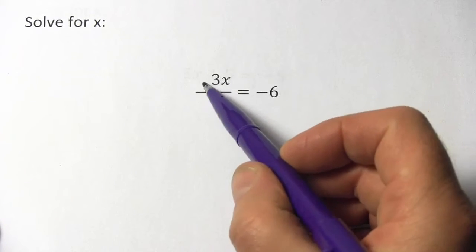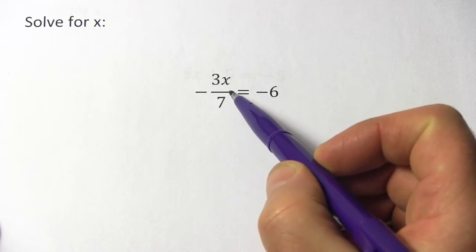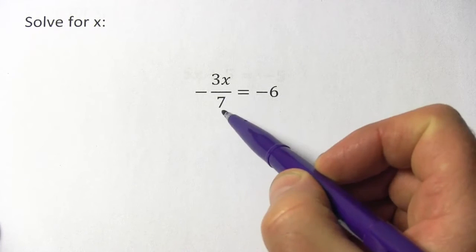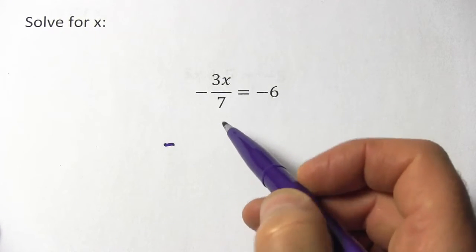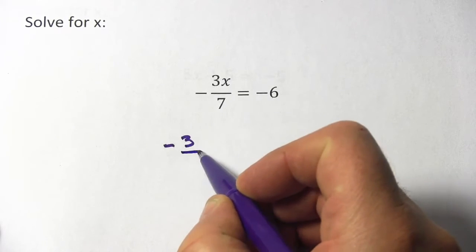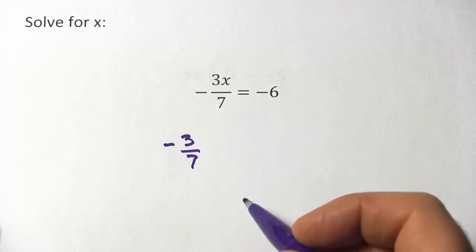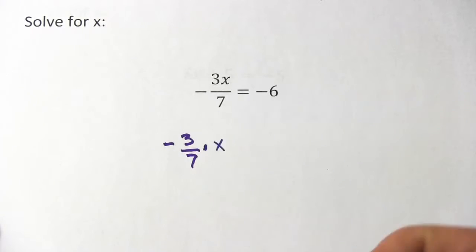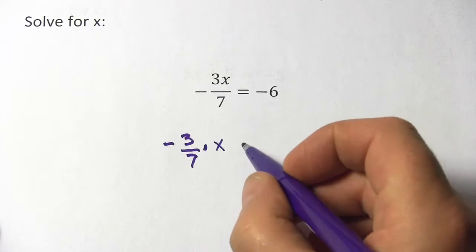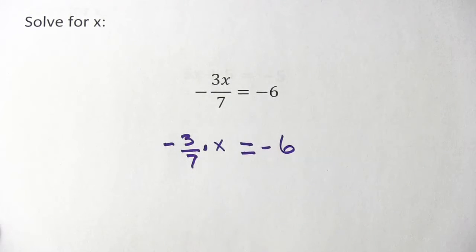Well, when you have x on the top of a fraction like this, negative 3x over 7, another way to write that is separating the fraction and the x and then keeping them multiplied together. So this is the same as negative 3 sevenths times x. Just two different ways to write the same thing. And I'll put the rest of the equation in here too, equals negative 6.